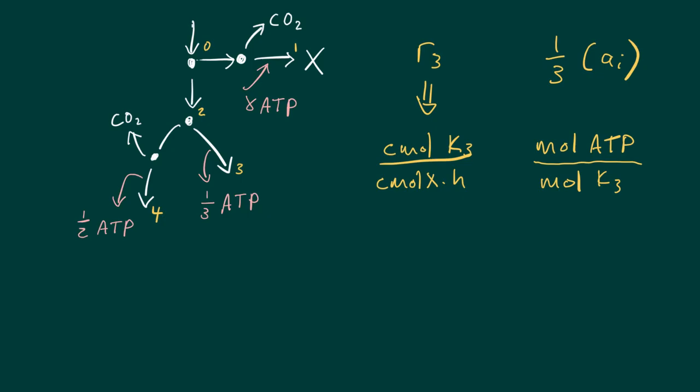Okay, so when we put the two terms together like we have over there, we will have a third of r3 having units. And now we can just see that, sorry, that will be a C mole over there. So we'll be cancelling these two terms out and we'll end up with the units of moles of ATP per C mole of X per hour.